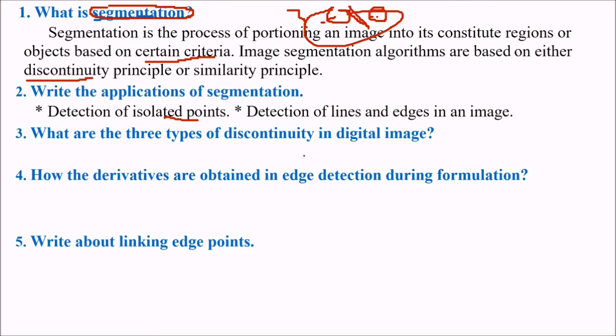So what are the three types of discontinuity in digital image? Point, lines, edges. These are the kind of discontinuity you will find in a digital image.